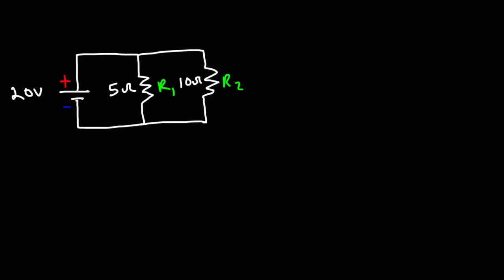Now let's try another example. This time, we have two resistors connected in parallel. Calculate the power dissipated by each resistor and the power delivered by the battery. Whenever you have two resistors connected in parallel, the voltage across them is the same — the voltage across R1 and R2 is the same as the voltage of the battery, which is 20 volts.